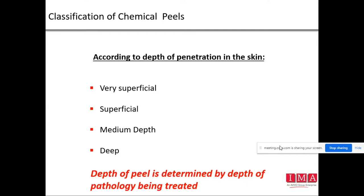Setting the right expectations is critical. The patient must understand what results to expect after one or several sessions, and plan their budget accordingly. For conditions like melasma — a chronic disease like diabetes — it can be controlled but never fully eliminated. Peels or light-based devices can keep it under control, but the patient must be mentally prepared that this is a chronic condition requiring ongoing maintenance sessions, and compliance with aftercare is essential.